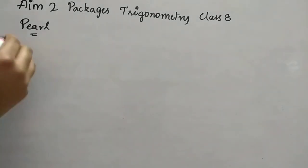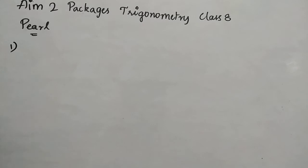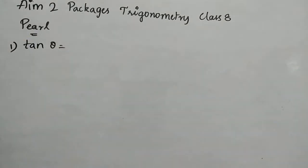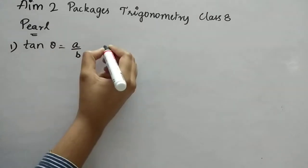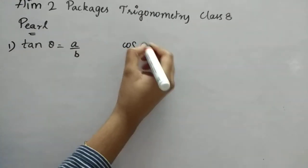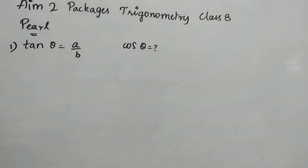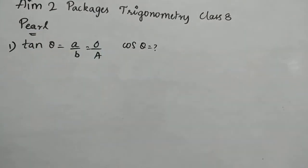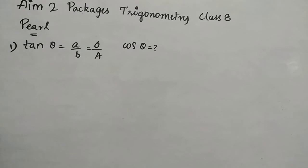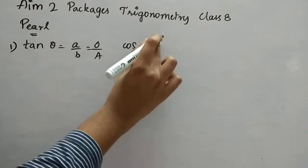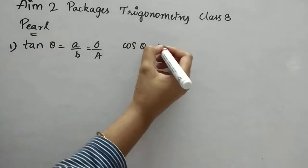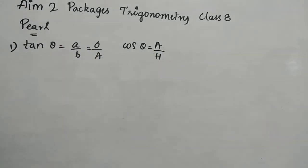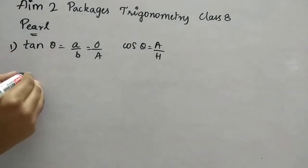First question: tan θ is given as A by B, and we have to find cos θ. The tan θ formula is opposite by adjacent, so we know those two values. But cos θ formula is adjacent by hypotenuse, and we don't know the hypotenuse. So let's draw a triangle and find all the values.